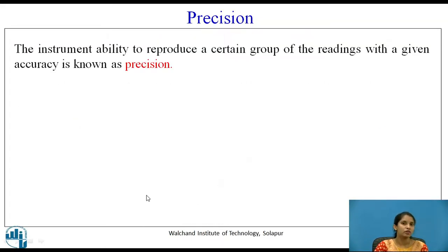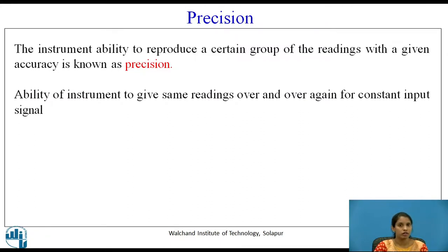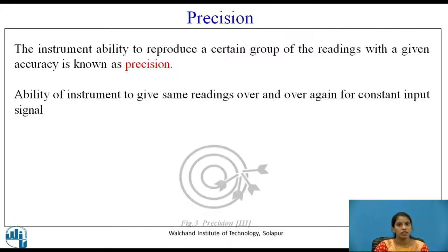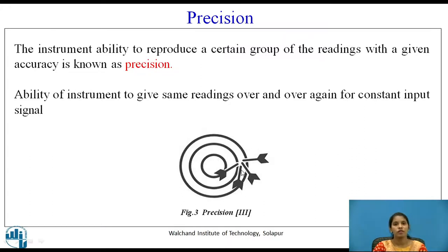The instrument's ability to reproduce a certain group of readings with accuracy is known as precision. Precision is the ability of an instrument to give the same readings over and over again for a constant input signal. Figure 3 shows an example of precision — here the target is the bull's eye, but all arrows are struck on a particular area away from center. These readings are said to be precise.